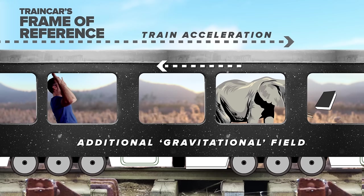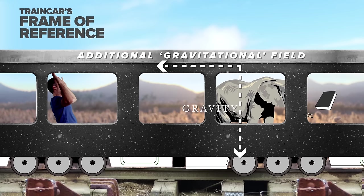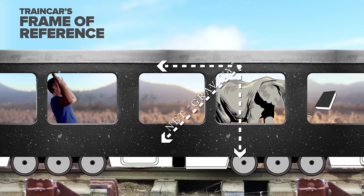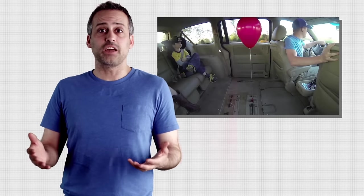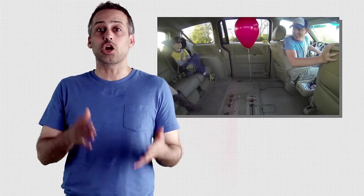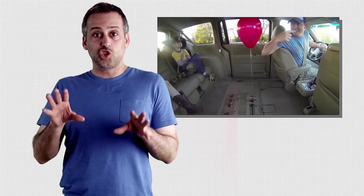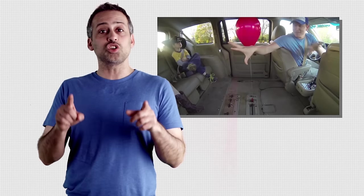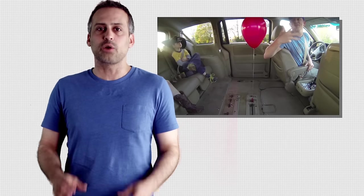That's interesting. If you combine that extra fake gravitational field with the actual gravitational field of the Earth, which points down, it looks like there's a net gravitational field inside the car that points at some angle down and back. Destin at Smarter Every Day has a pretty famous video of a helium balloon in an accelerating car that happens to illustrate this point really well.